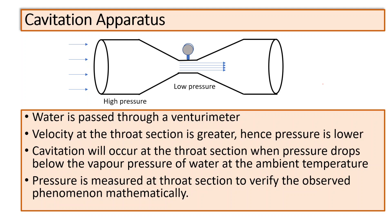We will verify whether the pressure measured by this gauge is actually less than the vapor pressure. We have already seen it through visual observation, and based on the pressure calculation, we are getting the same result that cavitation should occur.